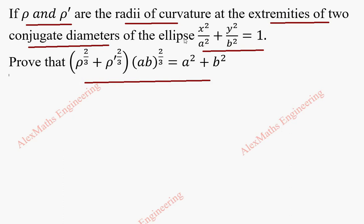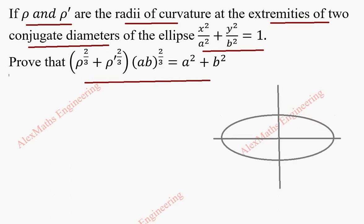Let's take a small diagram. We have an ellipse equation, so I take horizontal and vertical axis and construct an ellipse. The conjugate diameter means if we have one diameter, perpendicular to this will be the conjugate diameter. So the angle between these two is 90 degrees, that is pi by 2. Any point on the ellipse is taken as (a cos theta, b sin theta), which is also the parametric form. We are going to find the radius of curvature rho and rho dash and prove this expression.